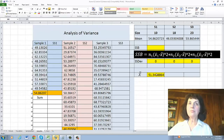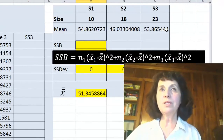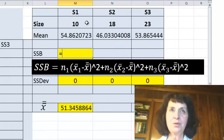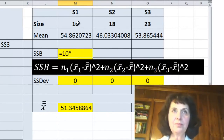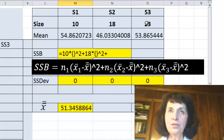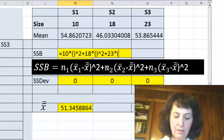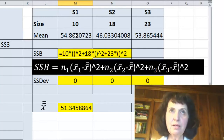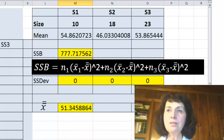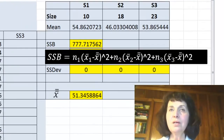Now I have the grand mean. My second step is to find the sum of square deviations between the means and the grand mean. I have to multiply each squared deviation by the size of the sample. So: 10 times (first mean minus grand mean) squared, plus 18 times (second mean minus grand mean) squared, plus 23 times (third mean minus grand mean) squared. And this is the sum of square deviations between the means of the three samples.